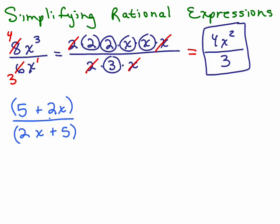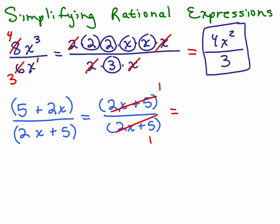So the question is, are these the same? And in fact they are. If you use the commutative property you could write the top one as 2x plus 5 if you want to see them written out exactly the same and then when you cancel, they both completely cancel out so you get a 1 for the answer.